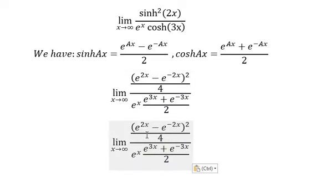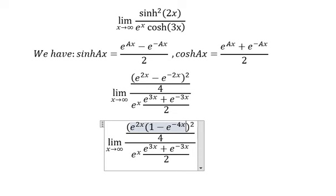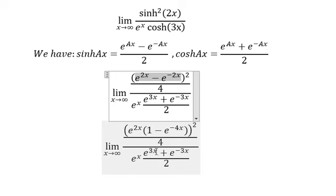So we put e to the power of two s go outside, so they should be like this. Because e to the power of two s multiplied by this one, we have this one. Now we can do similar for this one.